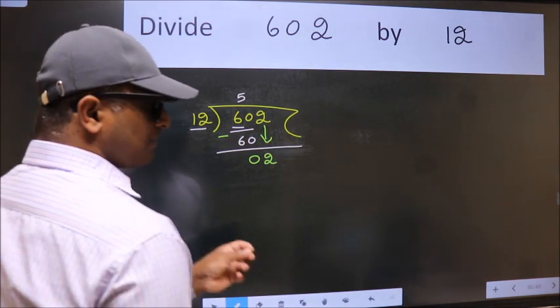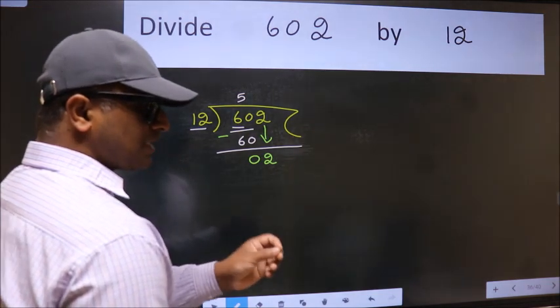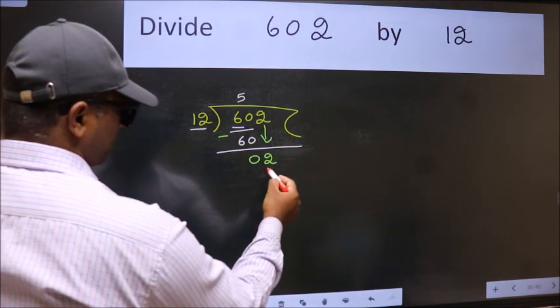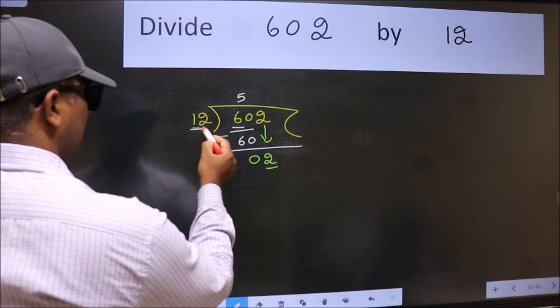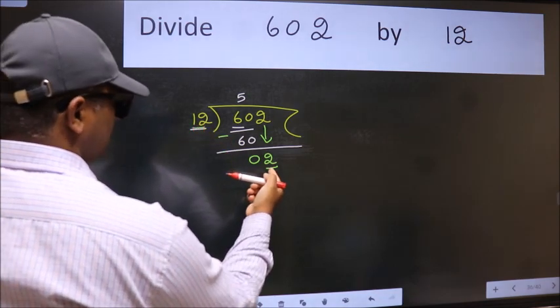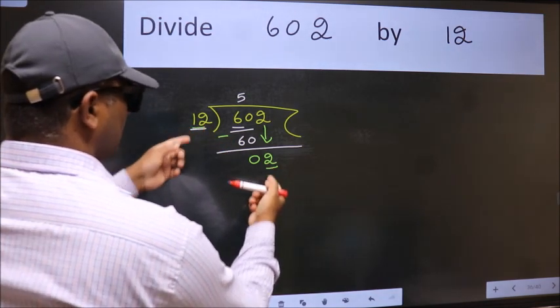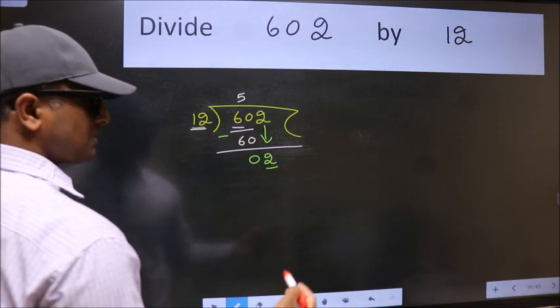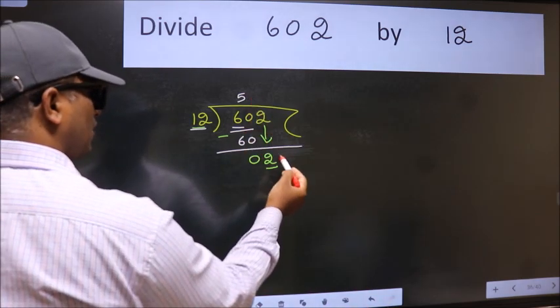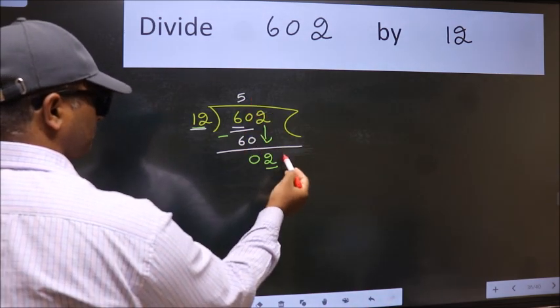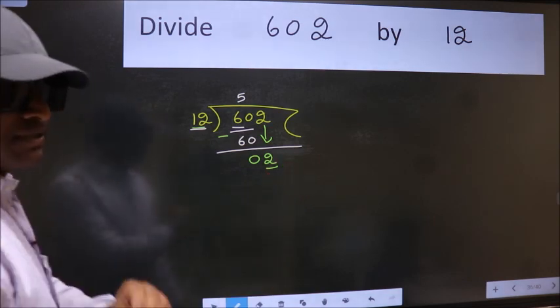After this step the mistake happens and the mistake is this. Here we have 2 and here 12. 2 is smaller than 12. So what many do is they directly put dot take 0 which is wrong.